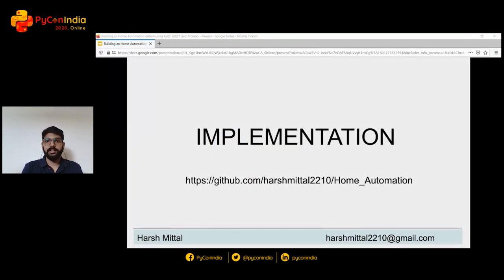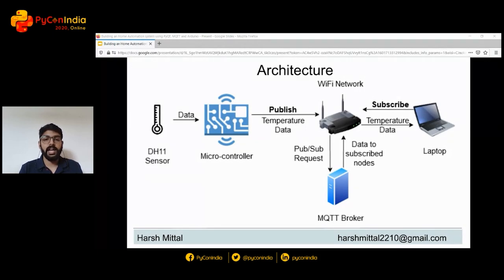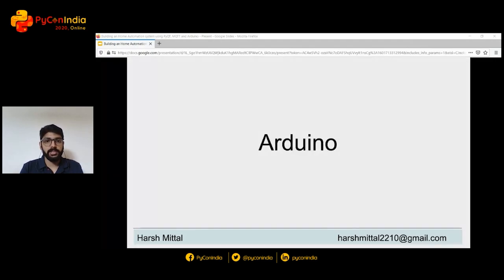Let's start with actually implementing it. Here I'll give you an overview of the code flow and architecture — for complete details please refer to the GitHub repository. This is the basic architecture: you have a microcontroller, Arduino in our case, which is connected to a DHT11 sensor — that's your temperature and humidity sensor. It will continuously collect data from this sensor and publish it over your local network. The MQTT broker will receive this data and send it to our laptops from which we have subscribed. In this implementation, the MQTT broker is also running on the laptop itself.